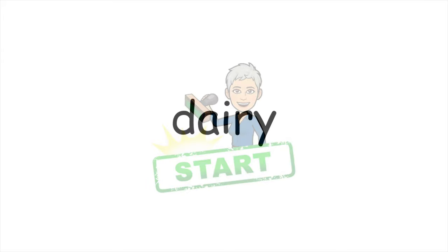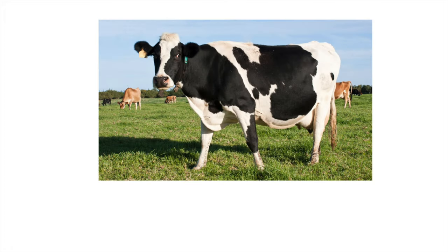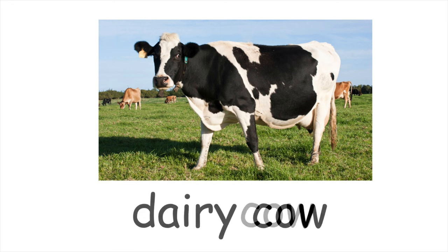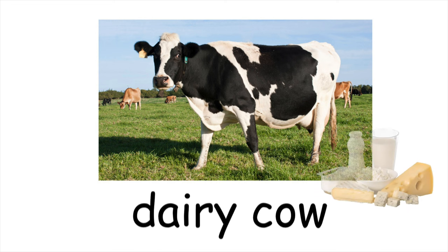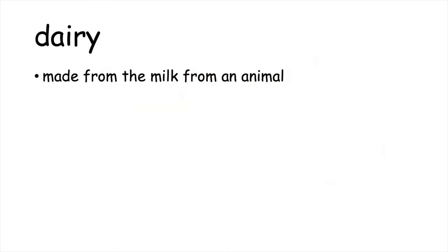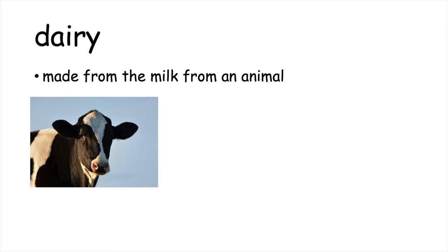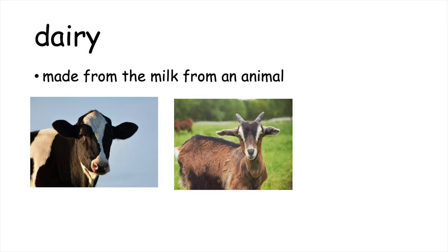Let's start with dairy. What is dairy? What is this? This is a cow. More specifically, this is a dairy cow. From the dairy cow, we get milk and other products made from milk. So the word dairy means made from the milk of an animal. Milk is often from a cow, but it can be from a goat or sometimes a sheep.